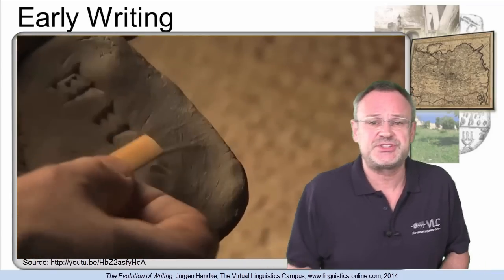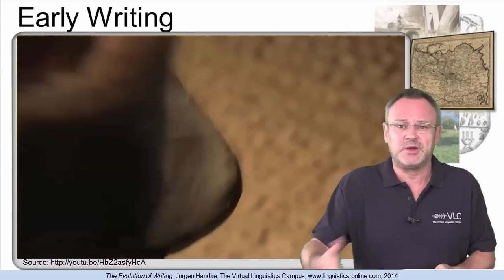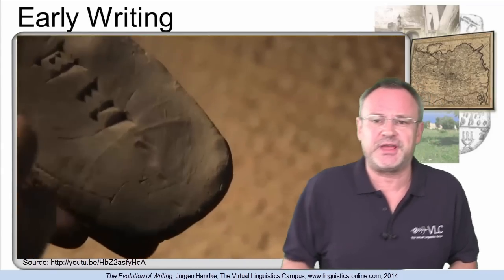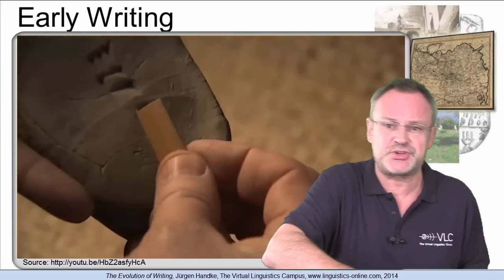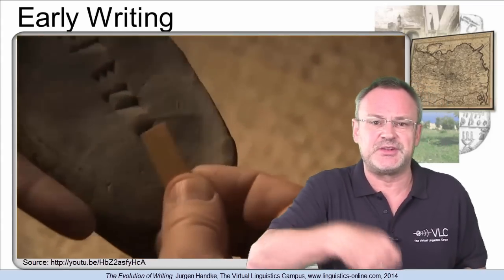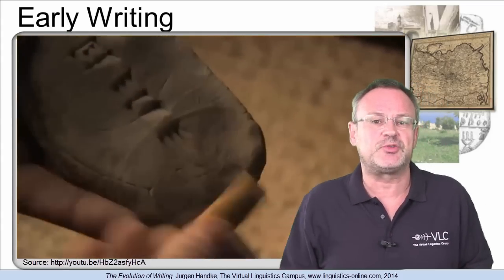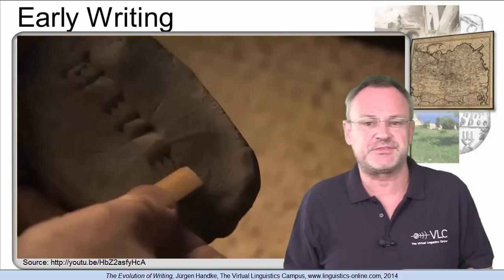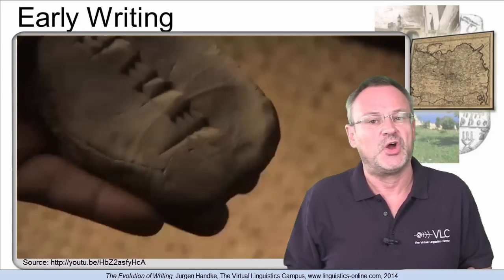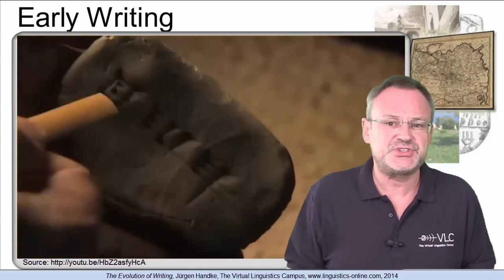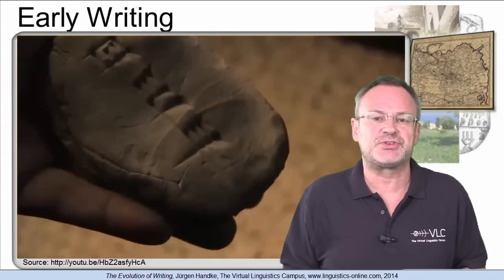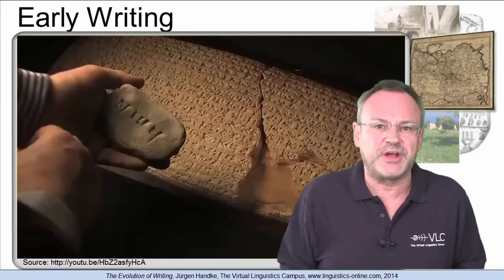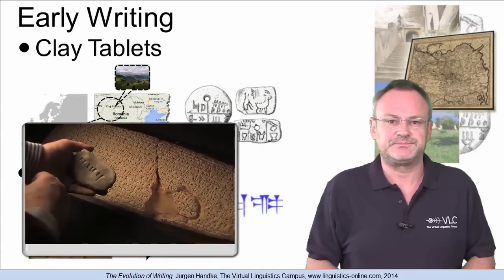Writing was done on clay with a special triangular-shaped pen. The symbols were pressed into the wet clay surface, then dried in the sun or baked for preservation. Often these early writings were contracts or were done for record keeping.